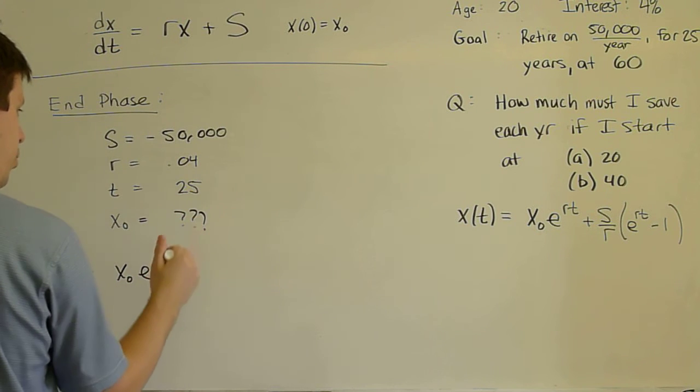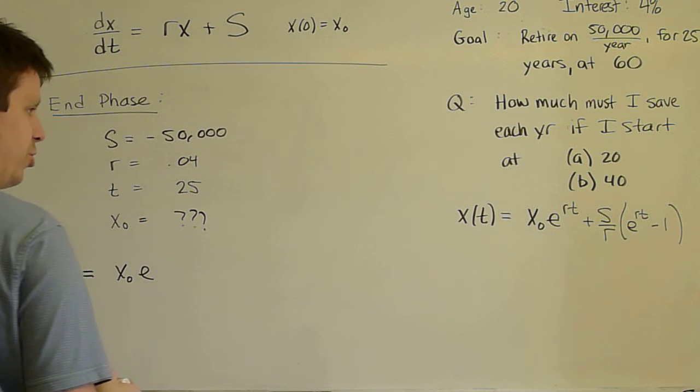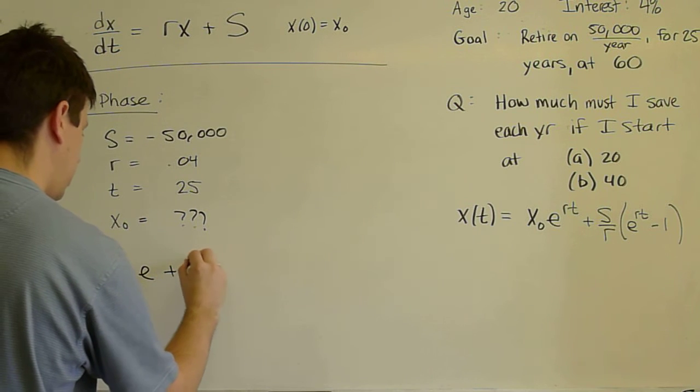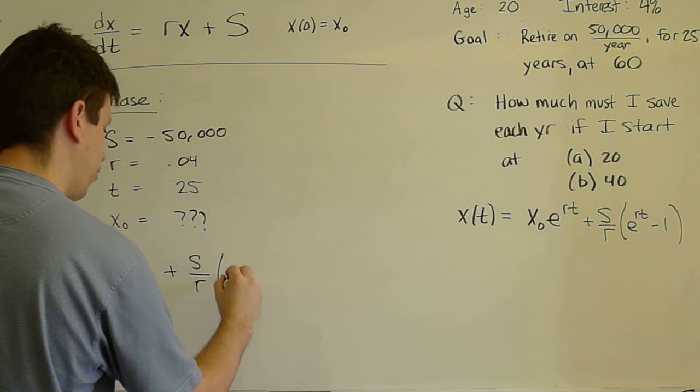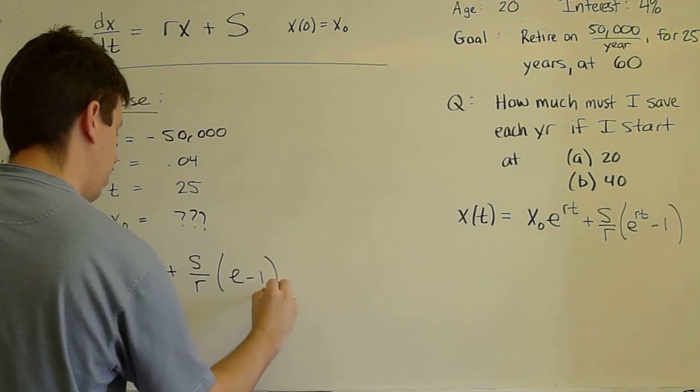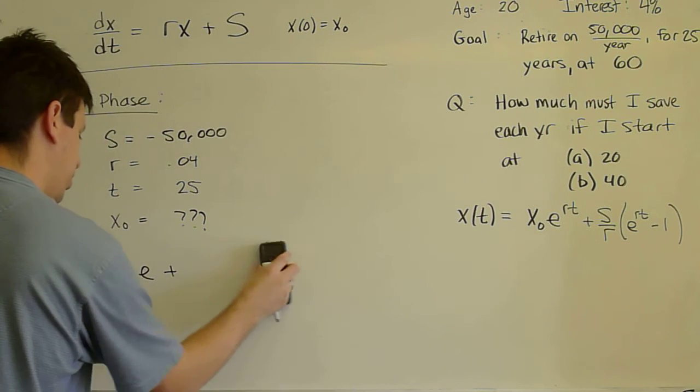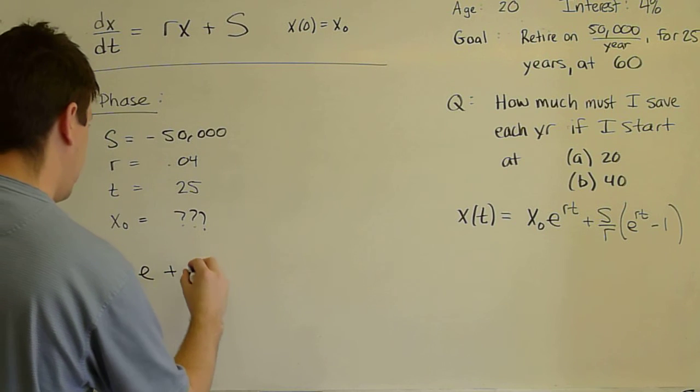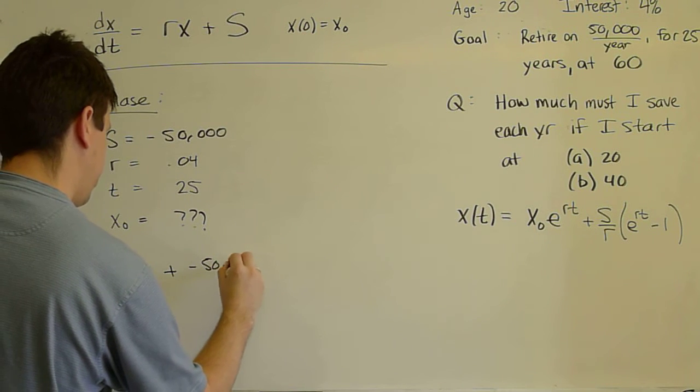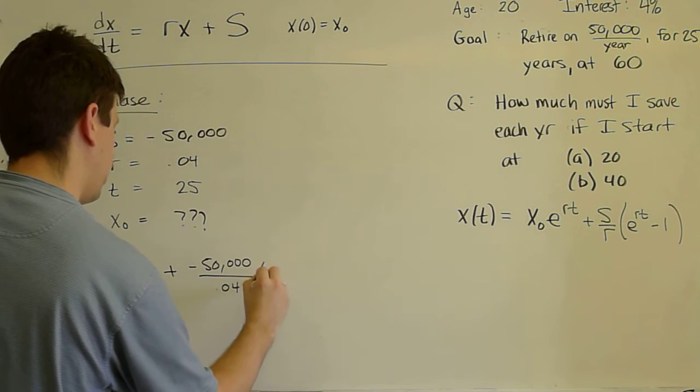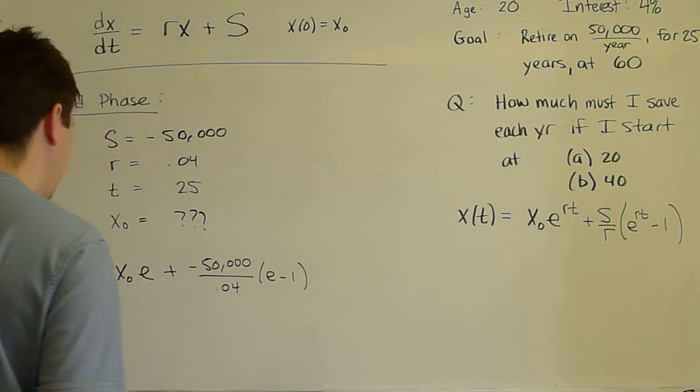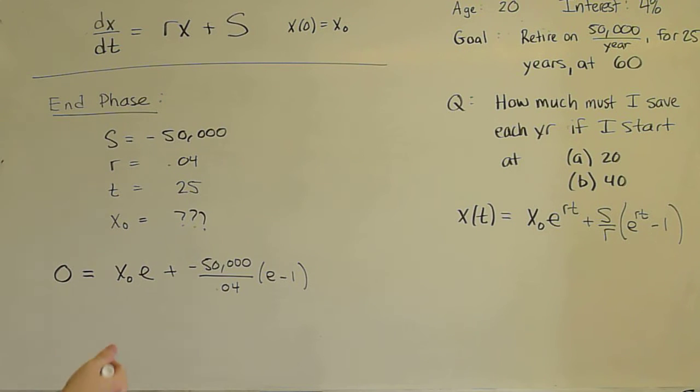E to the r*T, 0.04 times 25 is conveniently just 1. Plus S/r, e^(0.04*25) - 1. And I apologize. We do know S and R. S is -50,000 divided by 0.04 times (e - 1). So we can now solve for X₀.